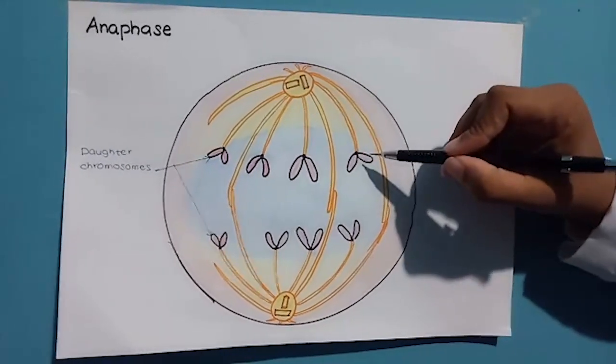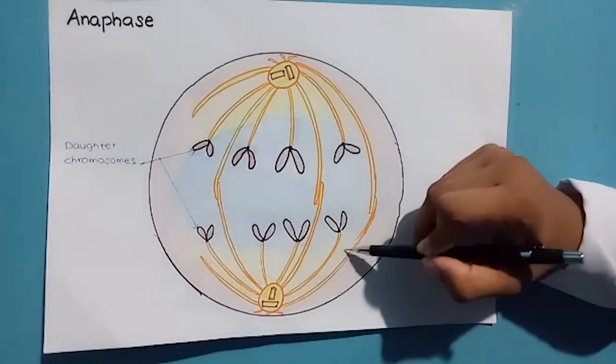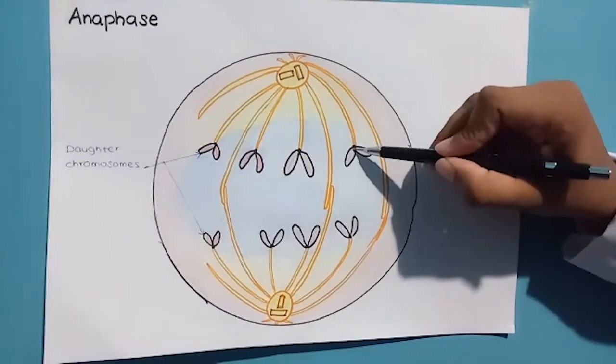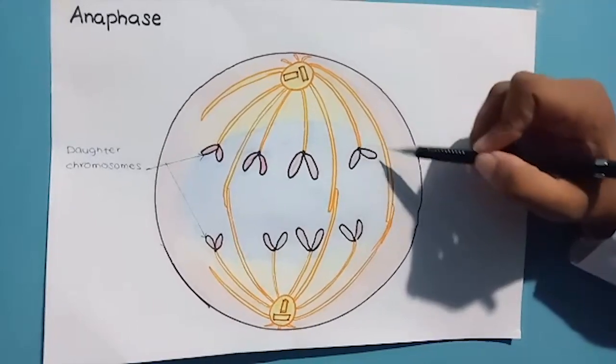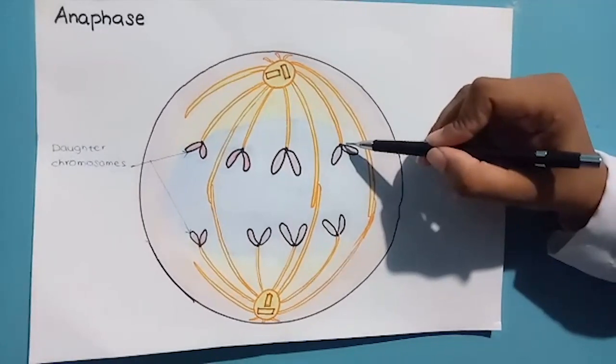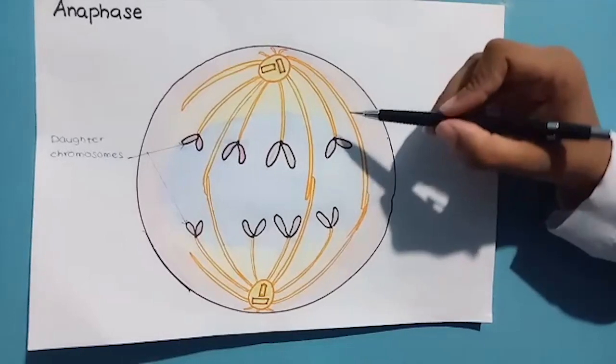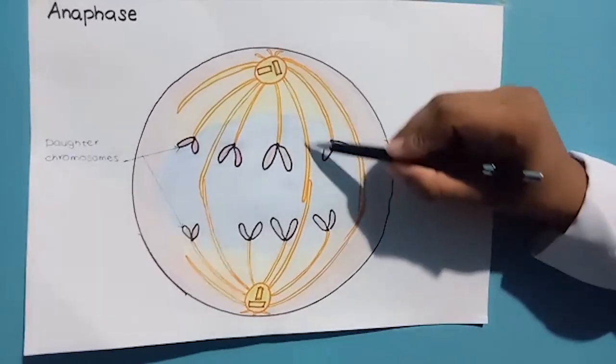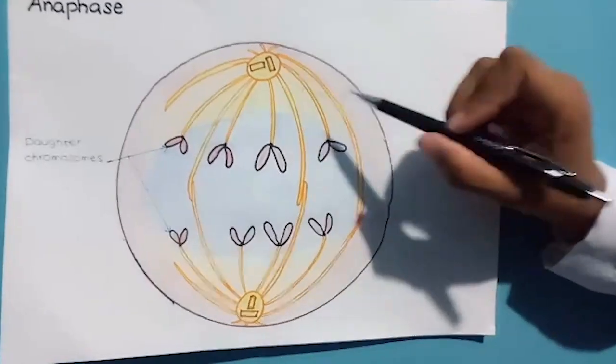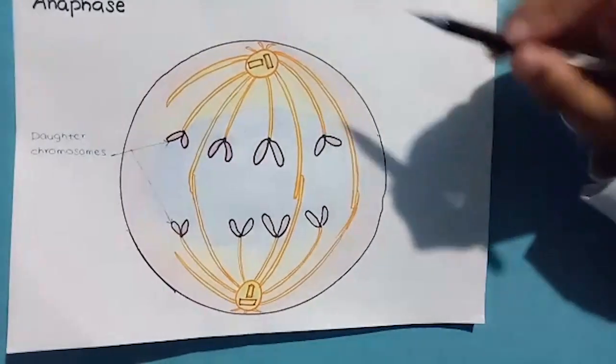The two new daughter chromosomes begin moving towards opposite ends of the cell as their kinetochore microtubules shorten. The centromeres are pulled ahead of the arms. The cell elongates as the non-kinetochore microtubules lengthen. By the end of anaphase, the two ends of the cell have equivalent and complete collections of chromosomes.